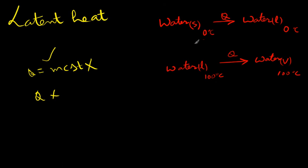Second example: you have liquid water at 100 degrees Celsius, and you give more heat. It will start boiling and vaporize, but the temperature of the vapor will still be 100 degrees Celsius. You have given heat, but there's no change in temperature. This means the Q = mcΔT formula is not complete for heat transfer — we need another formula not related to temperature but to state change.